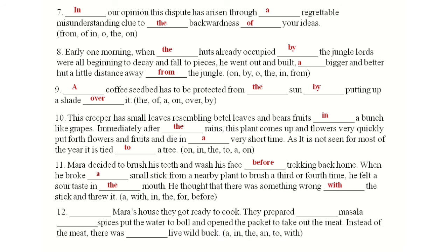Twelfth one: At Mara's house they got ready to cook. They prepared the masala and the spices, put the water to boil, and opened the packet to take out the meat. Instead of the meat, there was a live wild buck. See, these are all the activities for articles and prepositions.